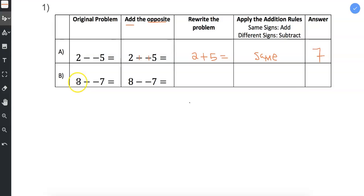Letter B, 8 minus a negative 7. We're going to add the opposites, we're changing subtraction to addition. So the subtraction becomes addition and then we have that the opposite of negative 7 is positive 7. So we change that negative 7 to a positive 7. And 8 plus a positive 7 is the same as 8 plus 7.